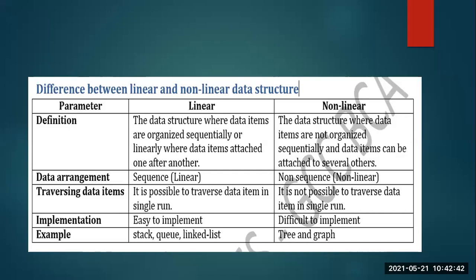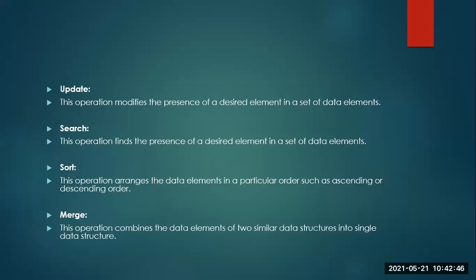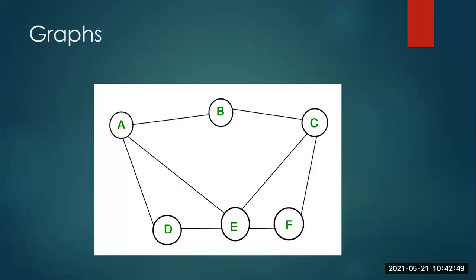But when I say tree and graph, coming back to the graph diagram — if I ask you to visit all of the vertices and all of the connecting edges in a single stretch, that won't be possible. Going from A to B, then B to C, C to F, F to E, E to D, D to A — which ones did we miss? We missed C to E and A to E. So traversing all items in a single loop at one stretch is not possible for non-linear structures.